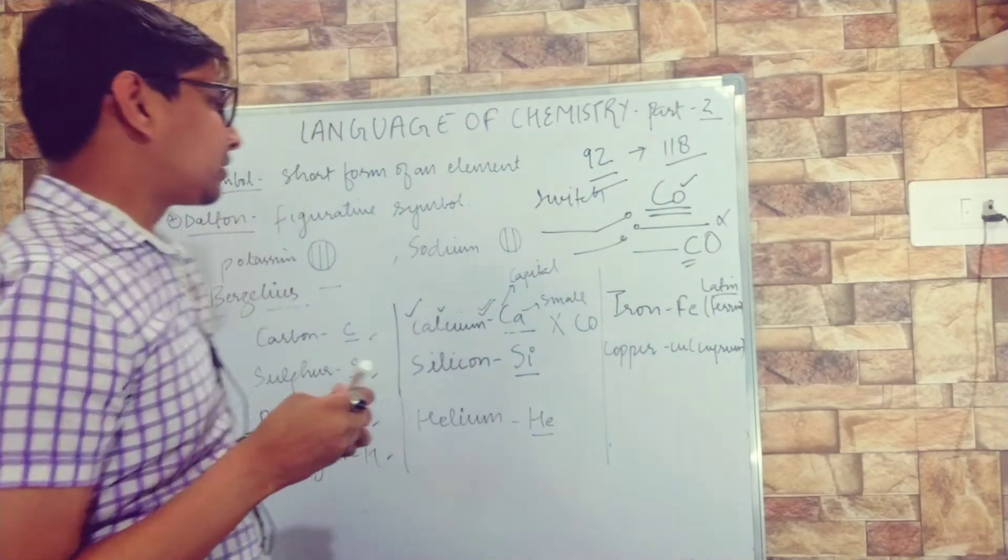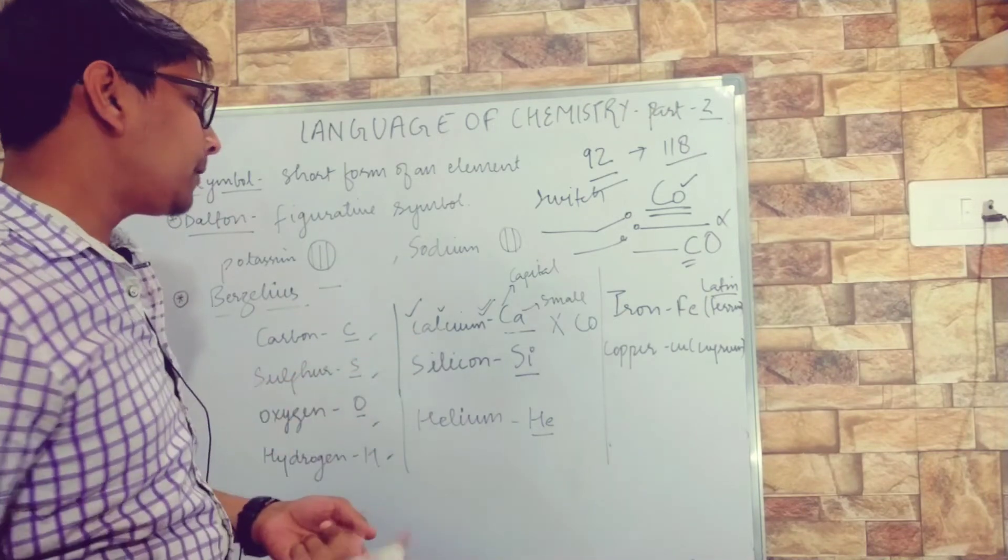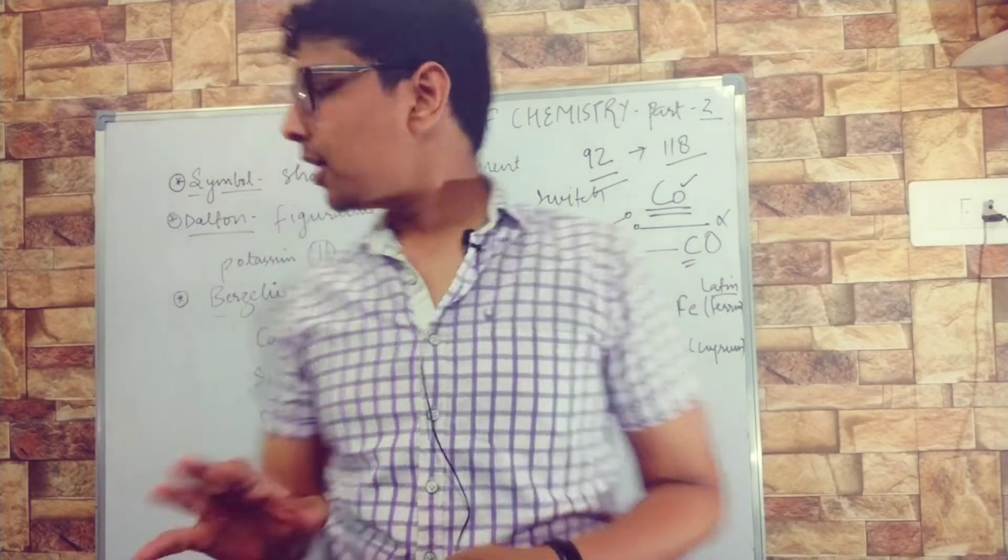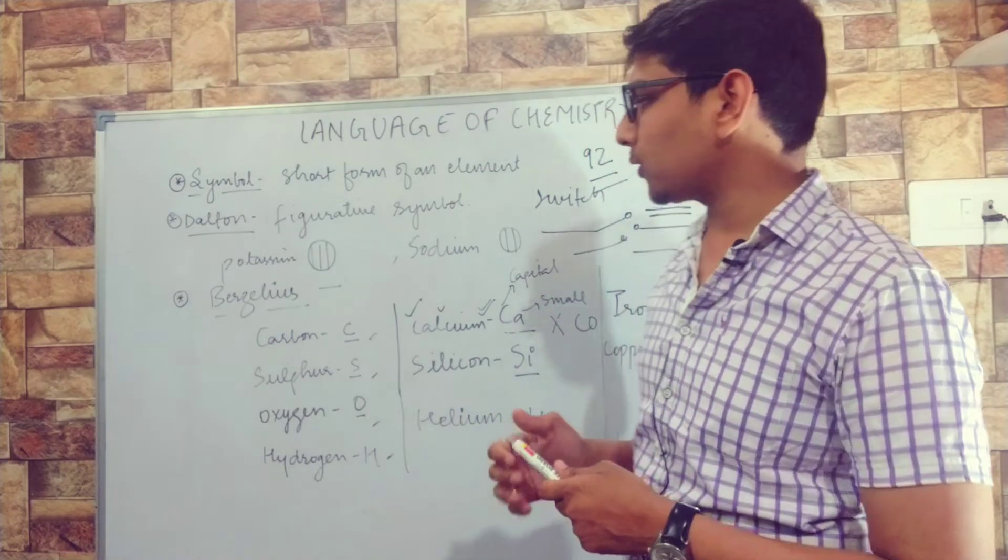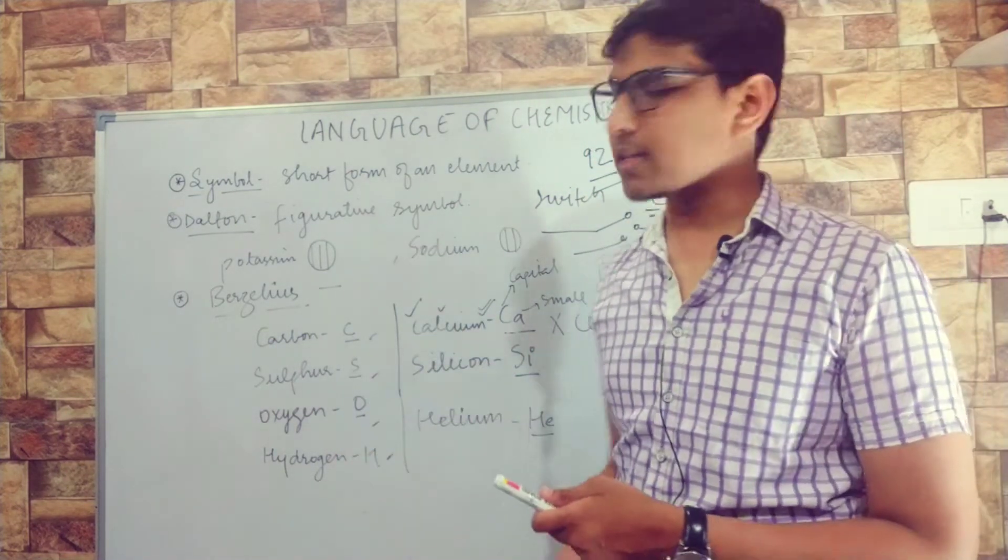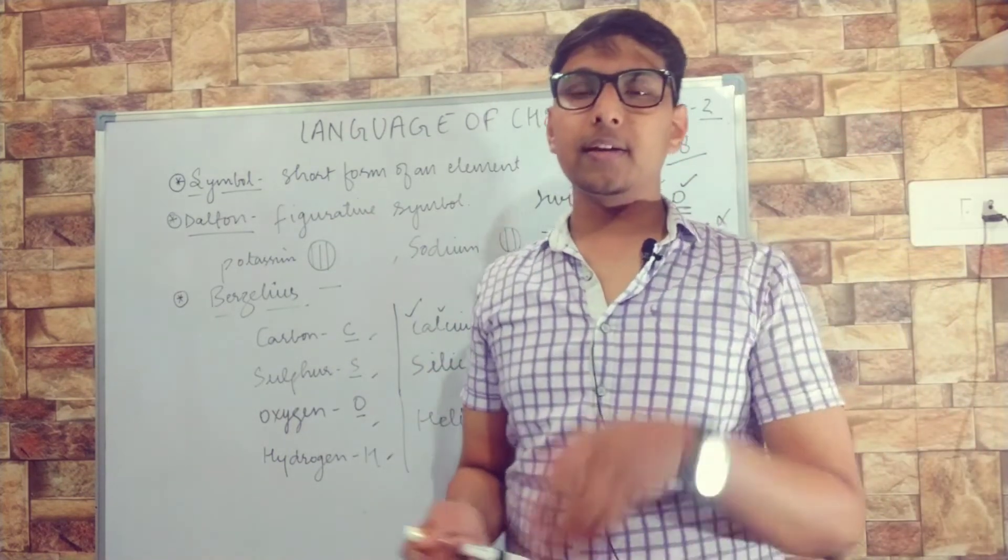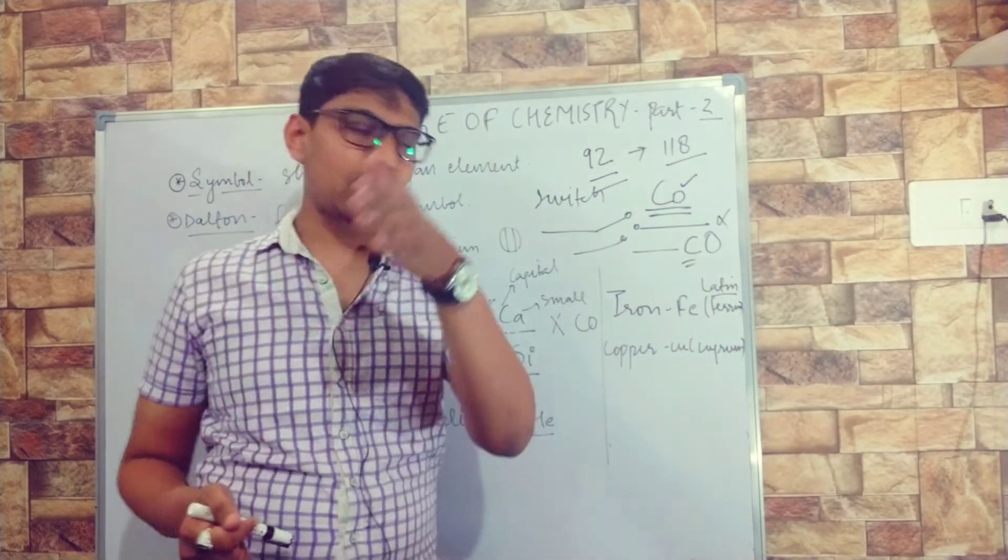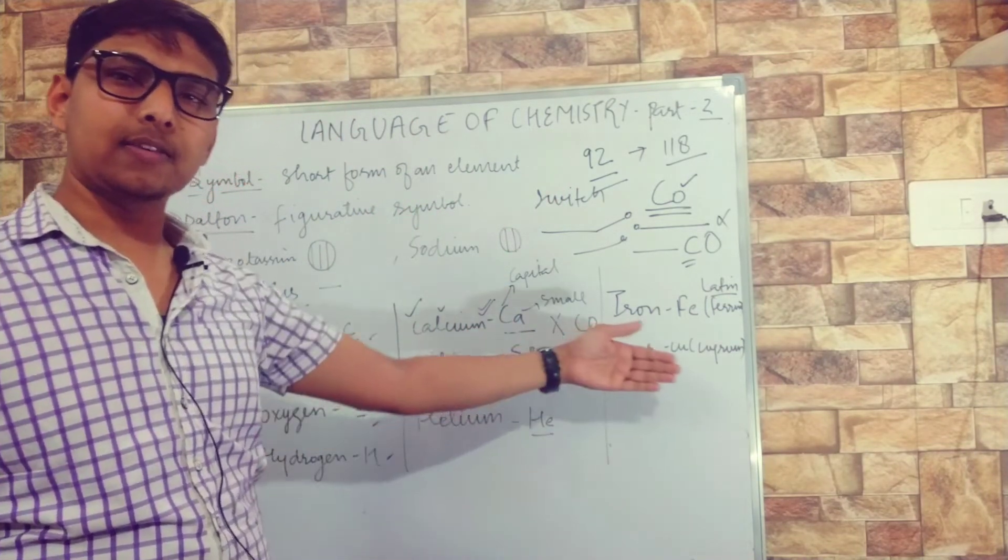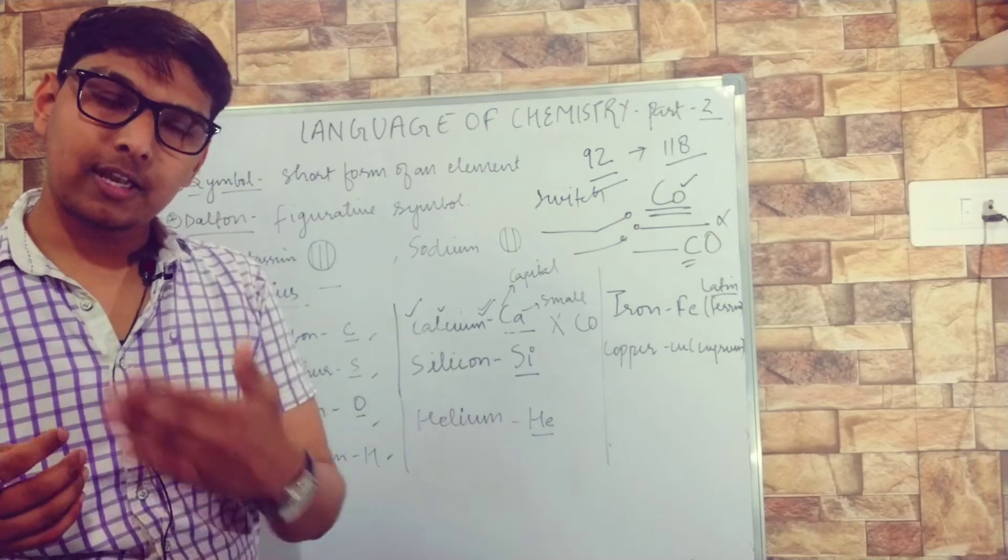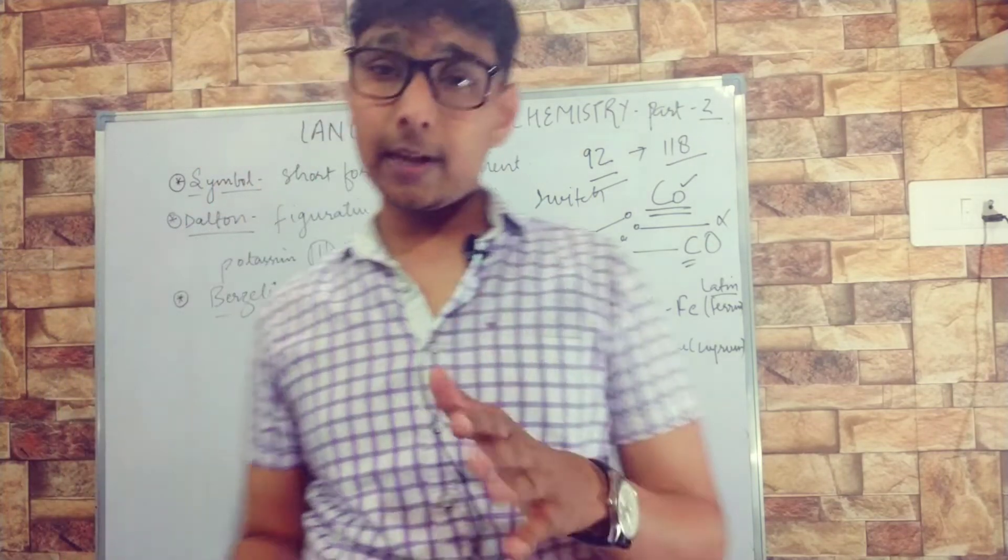That's why we write the first letter as capital followed by a small letter. There are several symbols - I have sent you pictures of the textbook where different elements and their symbols are shown. You have to make a chart in your copy with names of elements and their symbols in sequential order. Keep revising, keep learning, paste it somewhere so you can see it again and again.